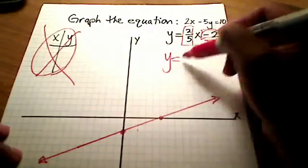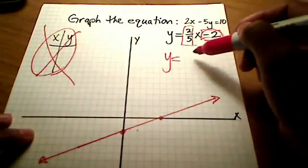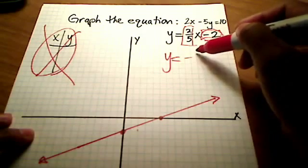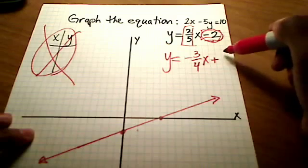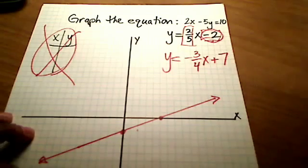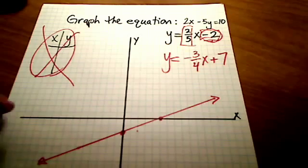Well, let's say, for example, I had an equation that looked like this. This is just a completely separate question now. What if I had something like negative 3 fourths x plus 7? What would that look like? Well, let me show you how that looks. And it's slightly different because it's got a negative slope this time.